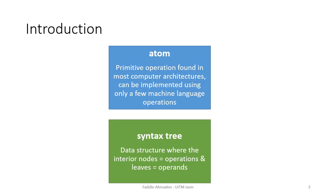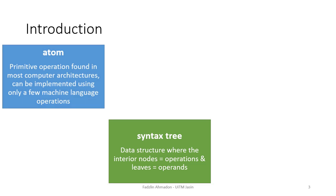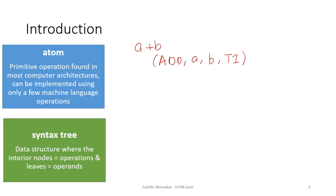We have discussed on atoms and syntax trees previously in Topic 2. Just a bit of a recap, atom is a type of primitive operation found in most computer architectures. Atoms can be implemented using just a few machine language operations. For example, if you have an input like a plus b, the atom can be written as add a and b and store into t1. Meanwhile, another form of your program structure is syntax tree, where the interior nodes are the operations and the leaves are the operands. So, for example, if you have something a plus b, the syntax tree would look like this.